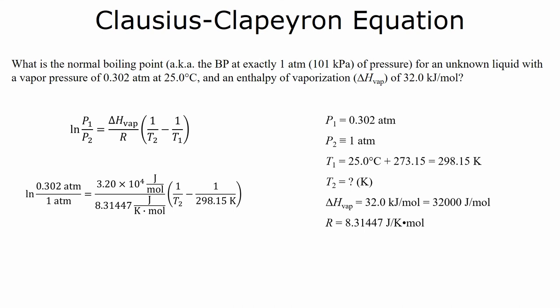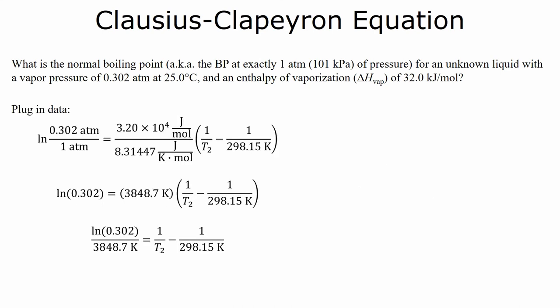Plug everything in, and now we solve for T2. Again, very careful that you don't mix up T1 and T2. Otherwise, you're going to get a negative answer. Which, in this case, a negative temperature in Kelvin isn't going to happen.